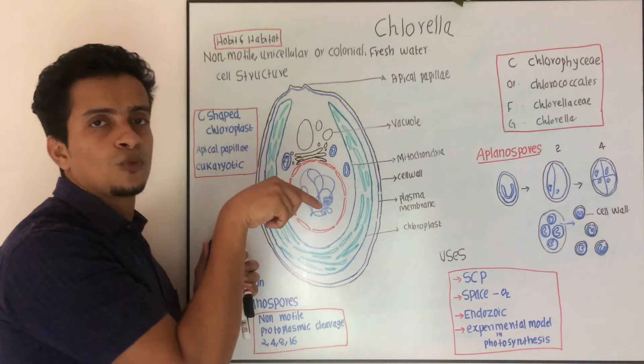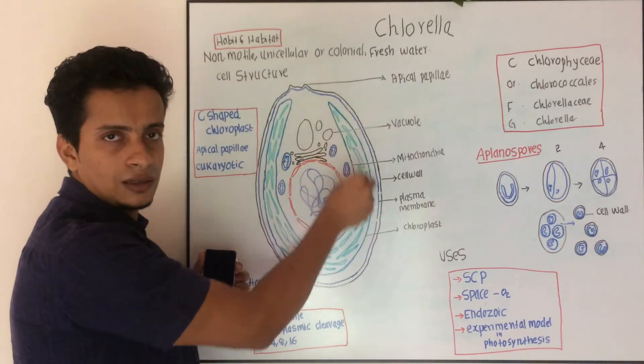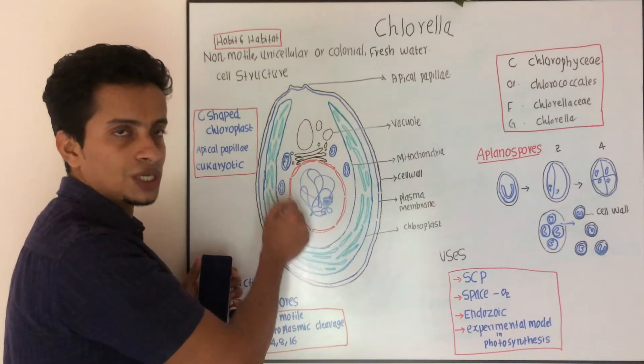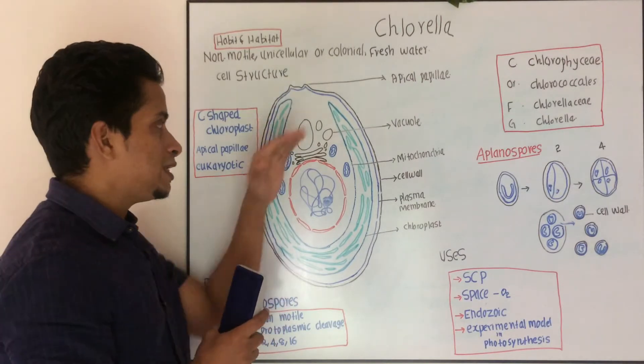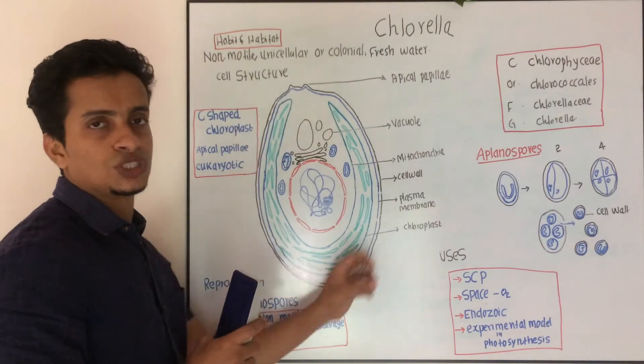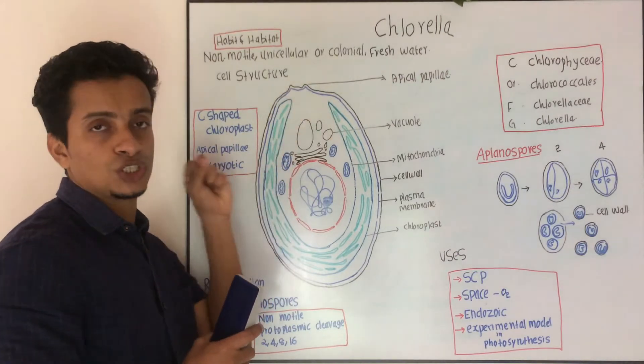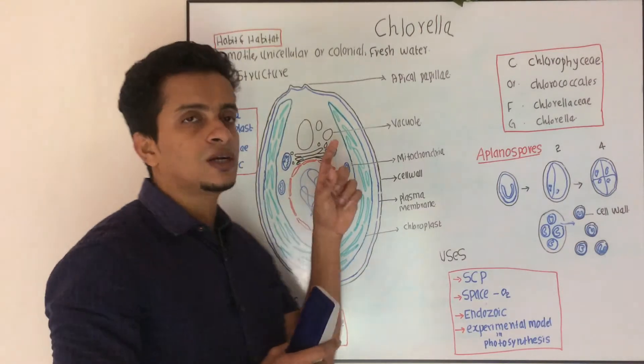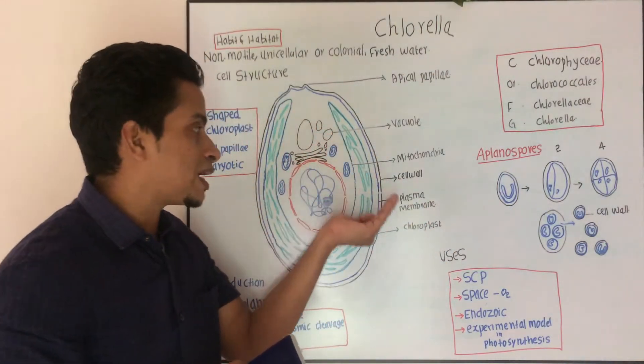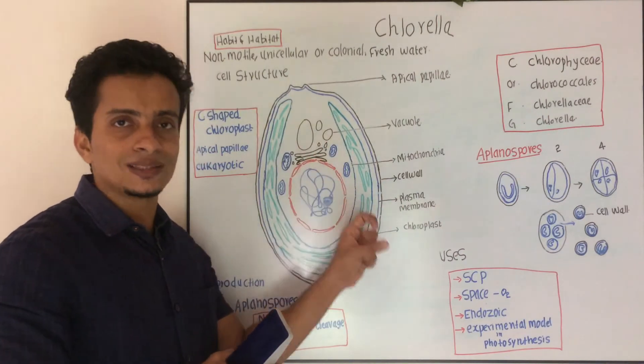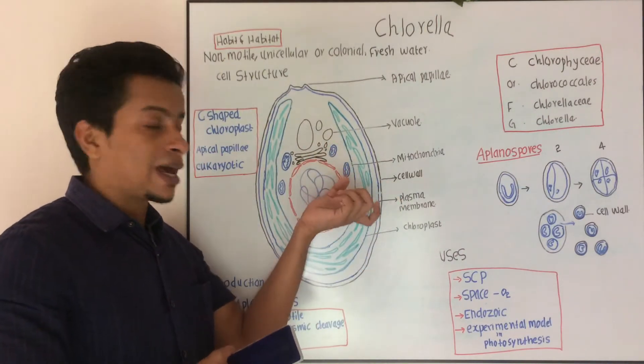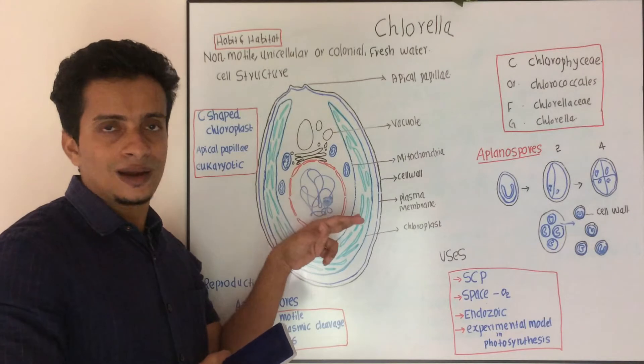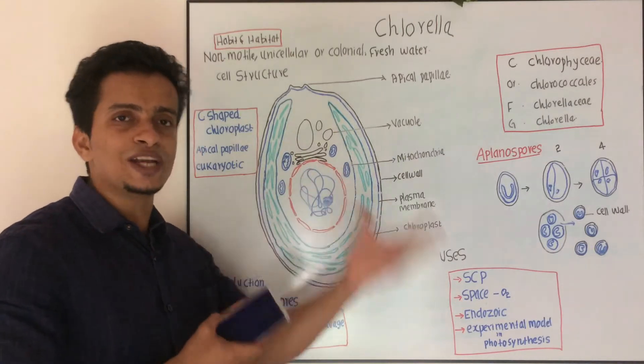Inside the chloroplast you can see lamella, photosynthetic apparatus, photosynthetic structure chloroplast. Chloroplast has genetic material, that is semi-autonomous cell organelles. Chloroplast and mitochondria, they depend on the nucleus.